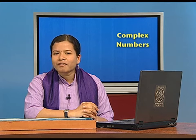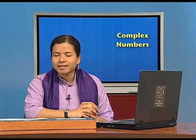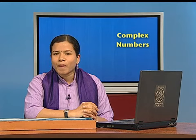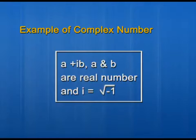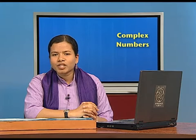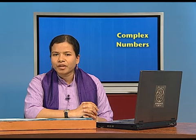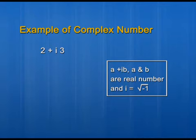Now let us see how we can form examples of complex numbers. According to the definition, numbers of the form a plus ib are called complex numbers, where a and b are real numbers and i is the square root of minus 1. This means we can choose a and b to be any real numbers. In the first example, I have taken a and b as integers, forming the complex number 2 plus i3. In the second example, I have taken a as an irrational number.